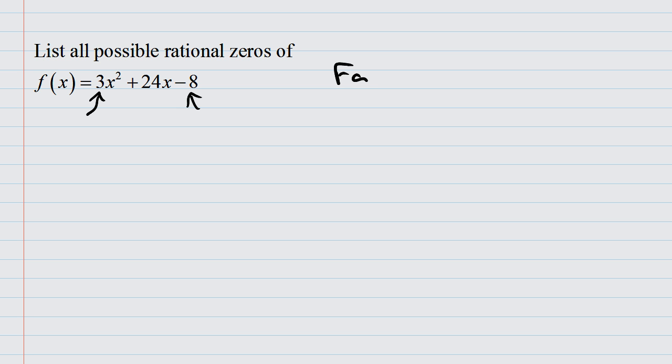The factors of negative 8. The things that could actually divide into it without a remainder. That's plus or minus 1, you always get that for free. Plus or minus 2. Plus or minus 4. And of course, the number itself, plus or minus 8.